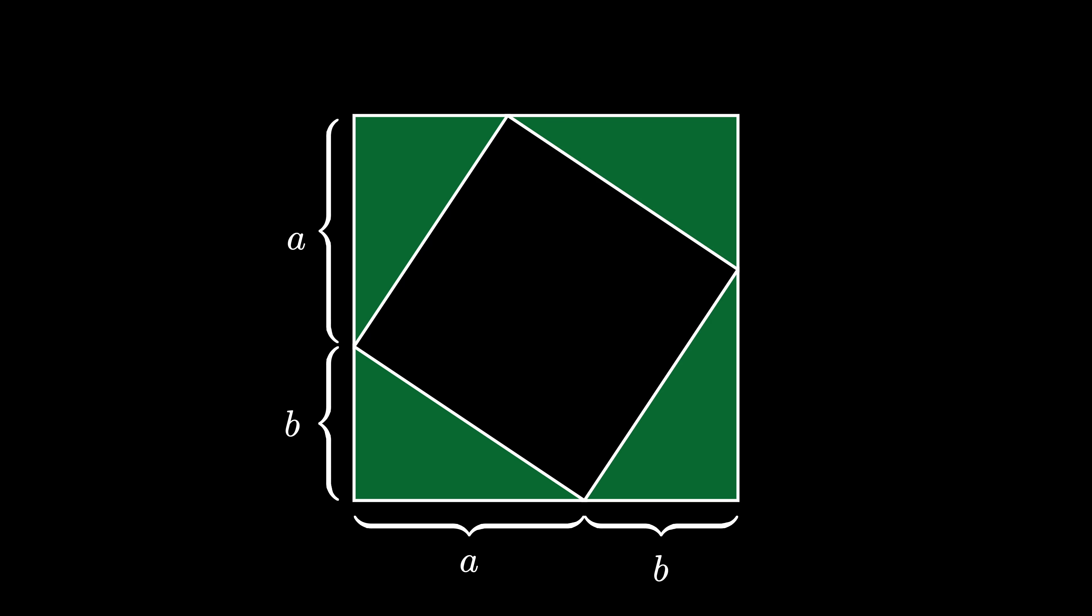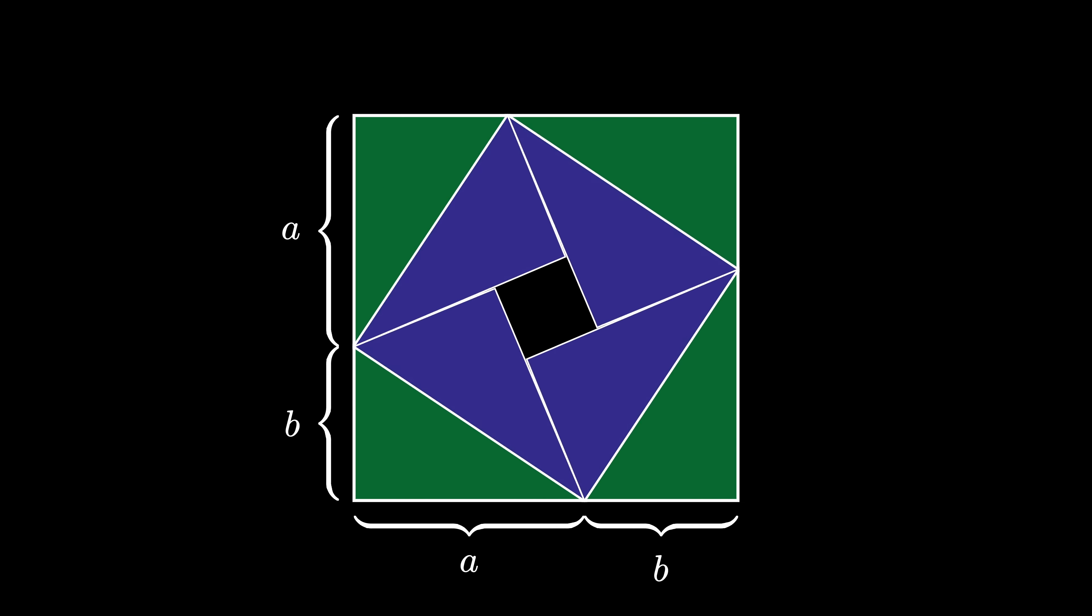Inside, there's a missing square. Reflect each triangle about its hypotenuse, creating this diagram using 8 triangles. Notice there's still a missing square inside.